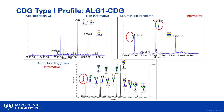I'd like to now go through some representative profiles that will highlight the utility of the testing offered here at Mayo Clinic. ALG-1 CDG is a CDG in which a type 1 pattern is seen in the transferrin profile, indicating an assembly or transfer defect. The transferrin profile here shows an abundance of disyalo transferrin, a higher than normal level of the asyalo transferrin, and lower levels of the fully glycosylated transferrin. The APOC3 profile is normal, and the total N-glycan analysis shows a signature glycan at the location MDZ 1124.